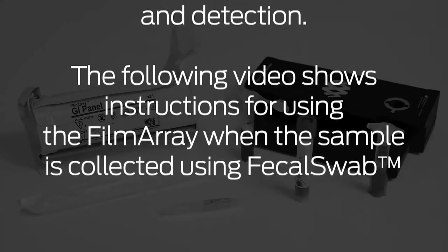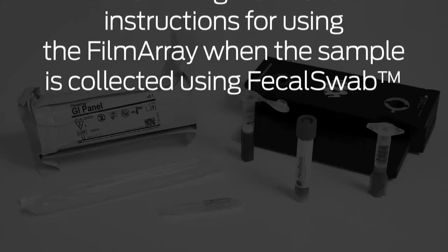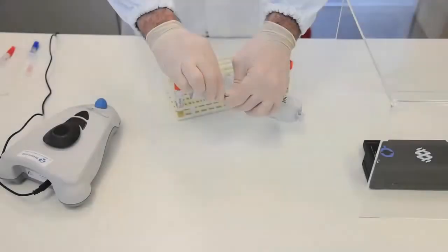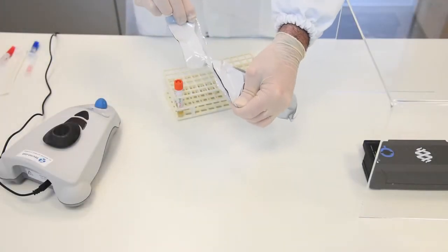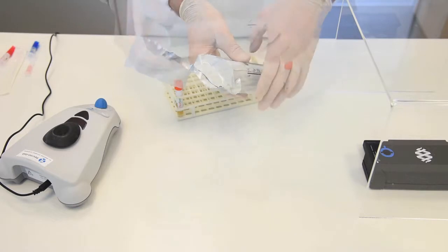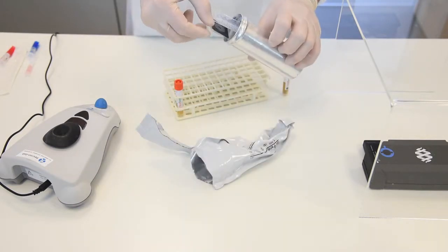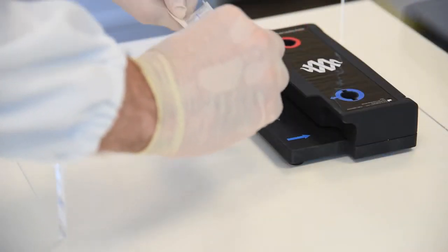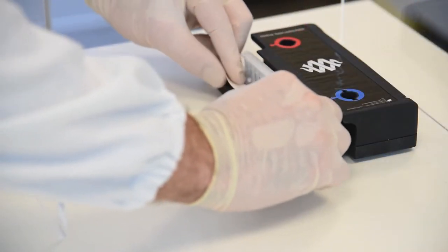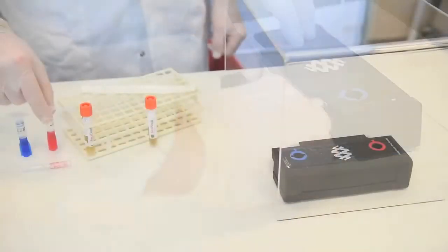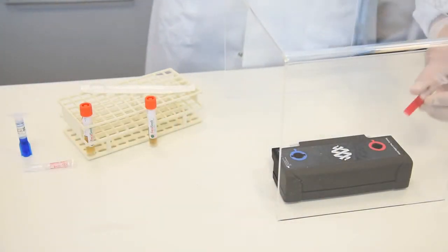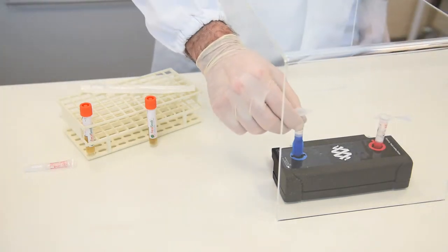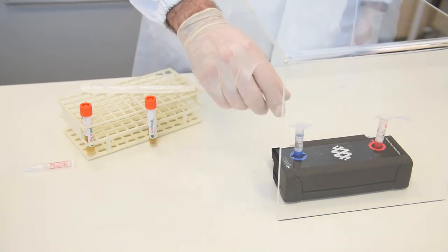The following video shows instructions for using the FilmArray when the sample is collected using fecal swab. Step 1, Prepare pouch. Open packaging and remove pouch. Insert pouch into pouch loading station. Place sample injection vial into red well. Place hydration injection vial into blue well.